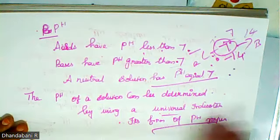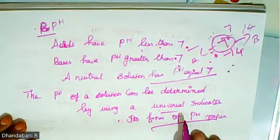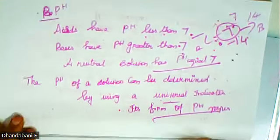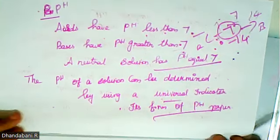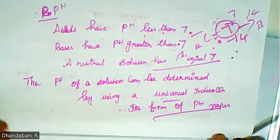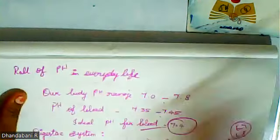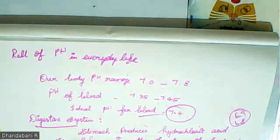The pH of a solution can be determined by using a universal indicator. The strip which we use is called pH paper. The pH paper is used to identify whether a solution is acid or base. This is the role of pH in everyday life.